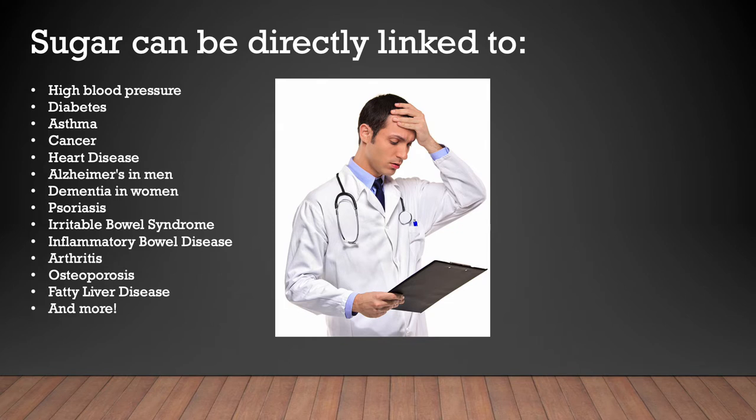Sugar can be directly linked to high blood pressure, diabetes, asthma, cancer, heart disease, Alzheimer's in women, dementia in women, psoriasis, irritable bowel syndrome, inflammatory bowel disease, arthritis, osteoporosis, fatty liver disease, and a whole lot more — we just don't have the data to directly link sugar to all of them yet. Sugar is not the cause of all of these conditions in most cases; however, sugar is almost always present. So that's something to keep in mind.